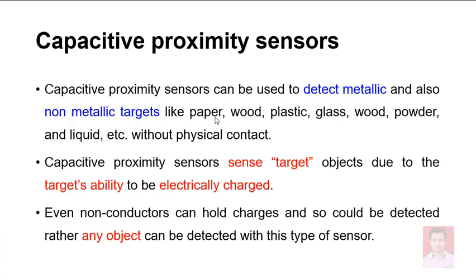Next, let's concentrate on the capacitive proximity sensor. As discussed, it detects both metallic and non-metallic targets. Non-metallic targets include paper, wood, plastic, glass, powder, and liquid — all can be detected without any physical contact.